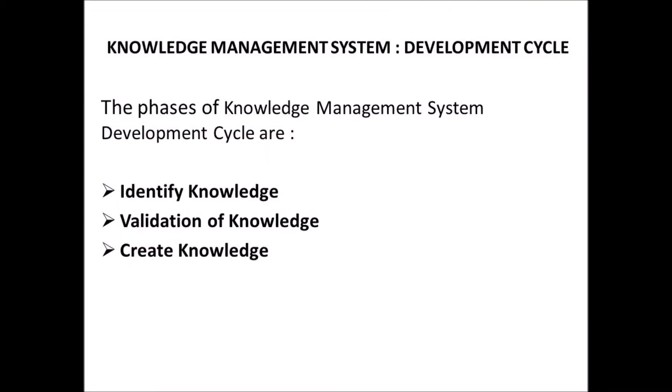In this lecture, we are going to discuss the Knowledge Management System Development Cycle. The phases of the Knowledge Management System Development Cycle are: first, Identify Knowledge; second, Validation of Knowledge; and third, Create Knowledge.